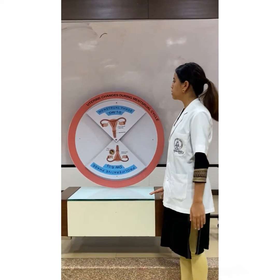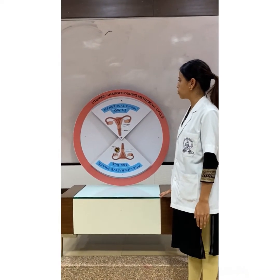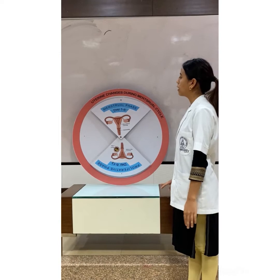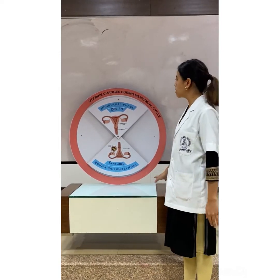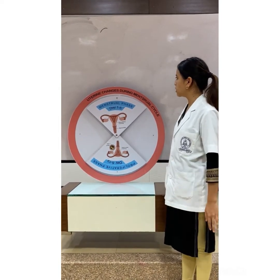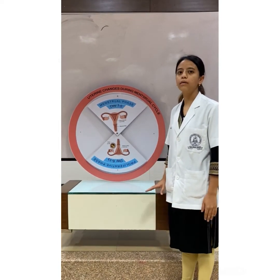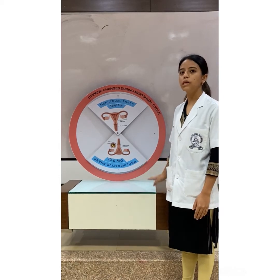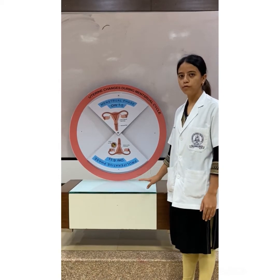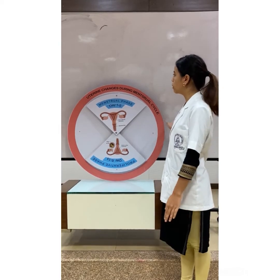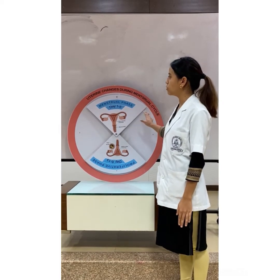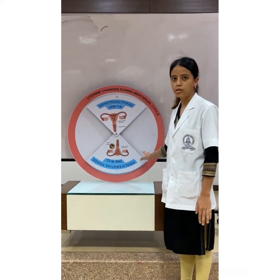Now I'll explain in detail about the menstrual phase. Whatever changes take place during the uterine changes are influenced by the changes taking place in the ovaries. Whatever hormones are released during the ovarian cycle will influence whatever happens during uterine changes.